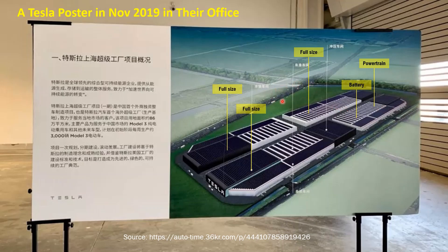This area was shown as open developing land in the initial plan. For example, die casting was probably not in scope when this plan was designed — that was earlier than 2019. But later on, die casting became a core part of the Gigafactory, which is why they built the die casting unit and a number of supporting buildings there. From this initial plan, we can see the northeast corner was designed as a full factory — and that points to the possible Model 2 factory we've been discussing.